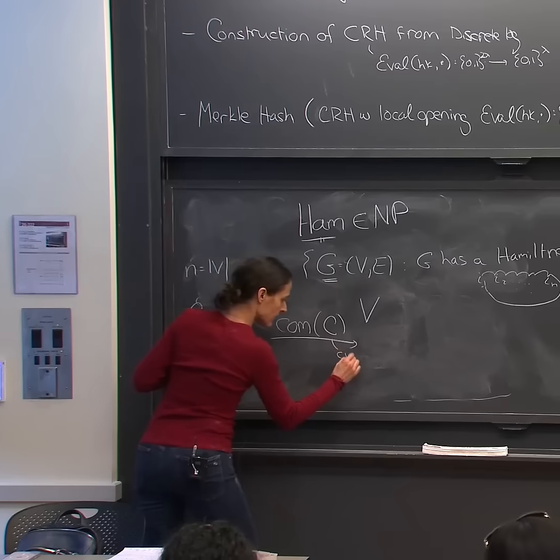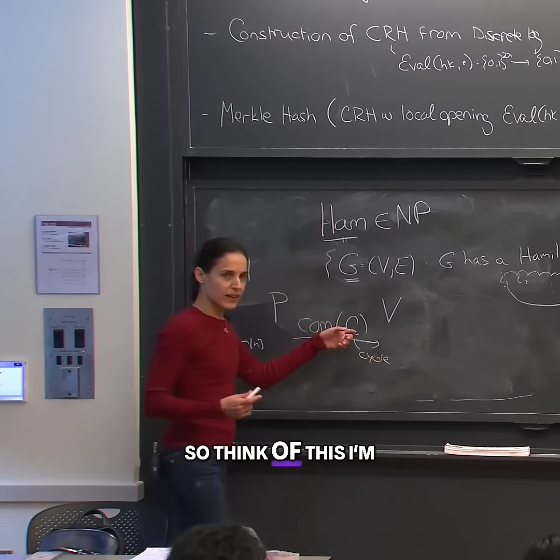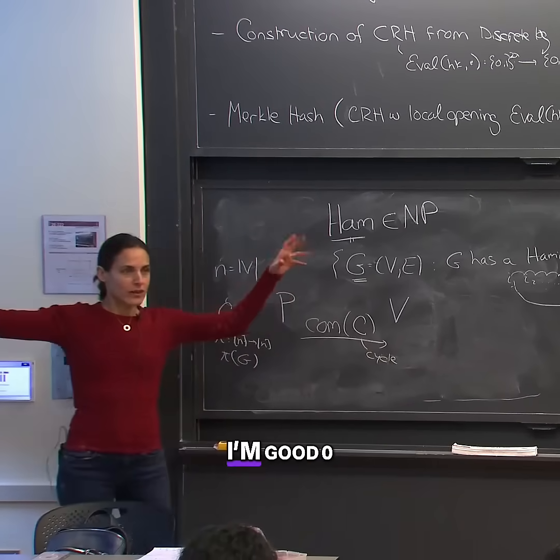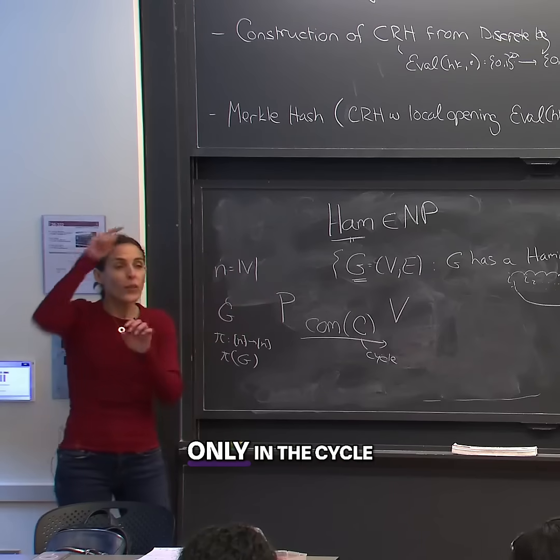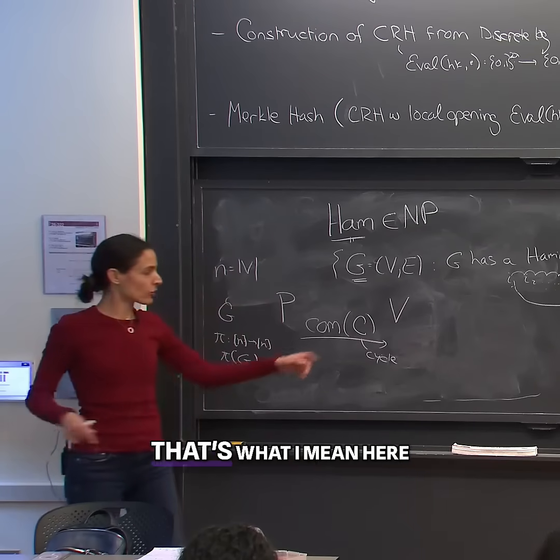So think of this, for all the possible edges, with 0, 0, 0, 0, only in the cycle I'm gonna put 1. That's what I mean here.